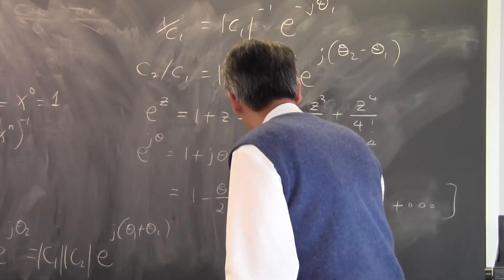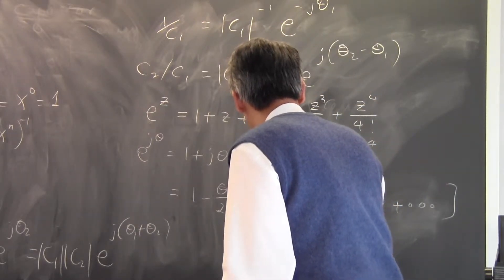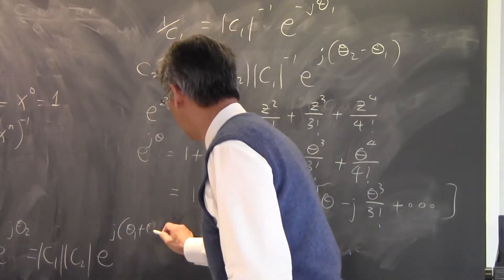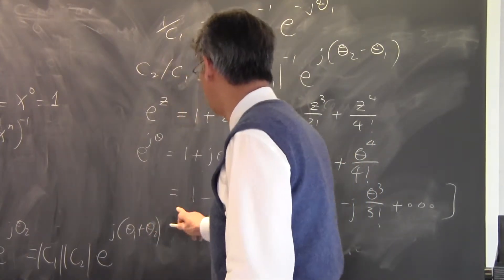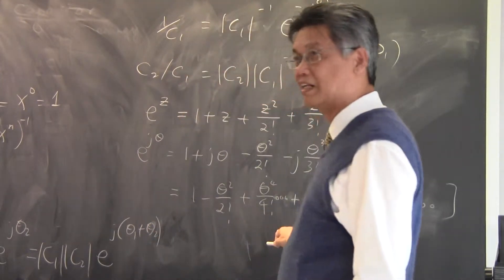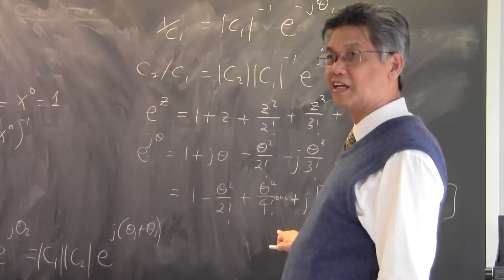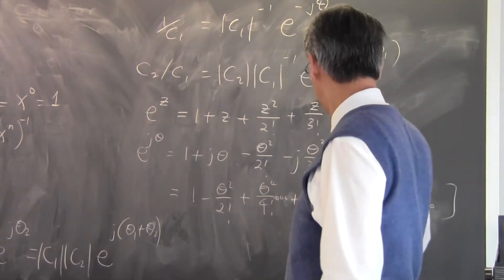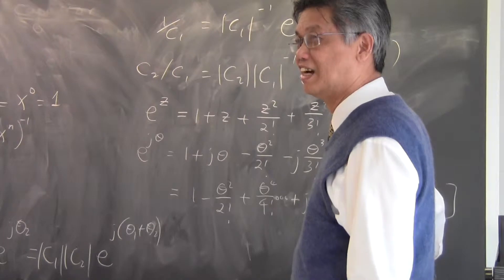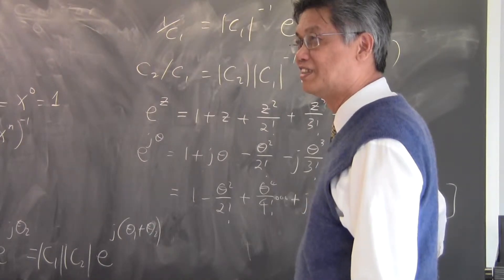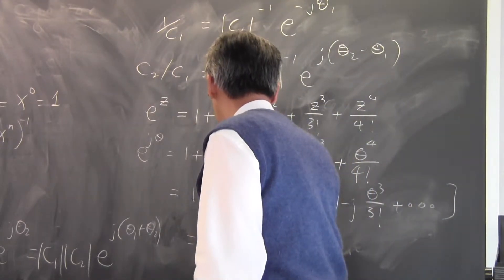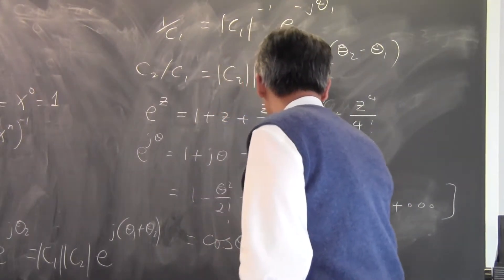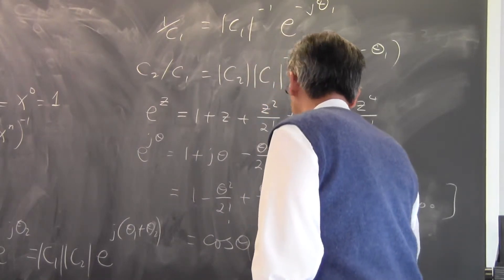This would also be dot dot dot here. Then you identify this series and go back to your textbook — voilà, this is the Taylor series expansion for cosine, and voilà, this is the expansion for sine. So you come up with the fact that this must be cosine θ plus j sine θ.